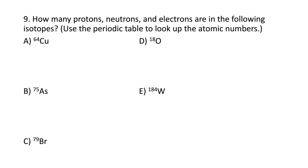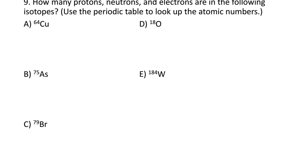We're going to use the periodic table to look up the atomic numbers. Let's look at copper. Copper has an atomic number of 29. So that means it has 29 protons, 29 electrons, and then 64 minus 29 is 35, so 35 neutrons.